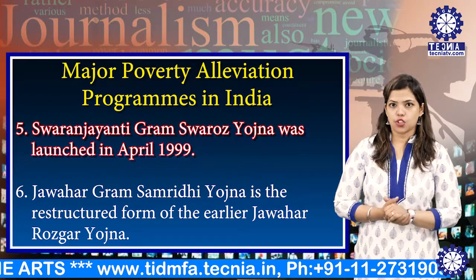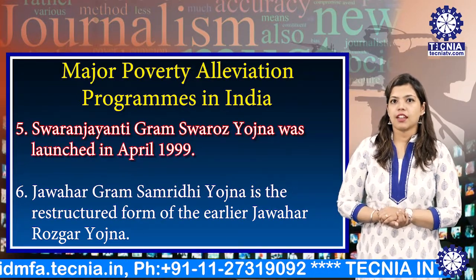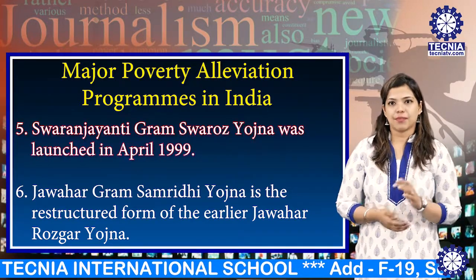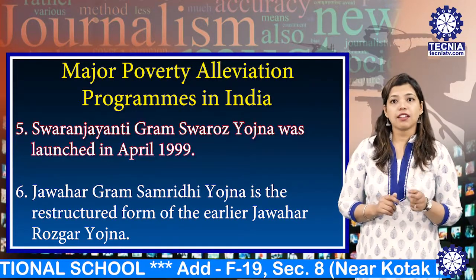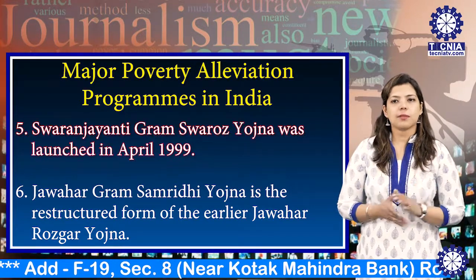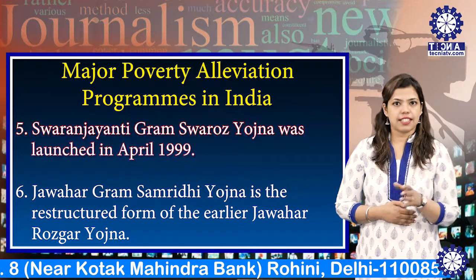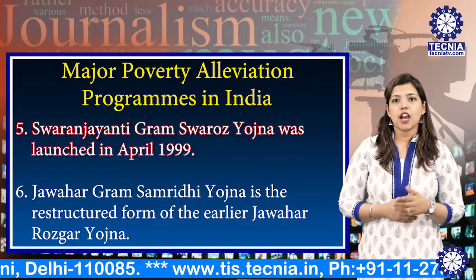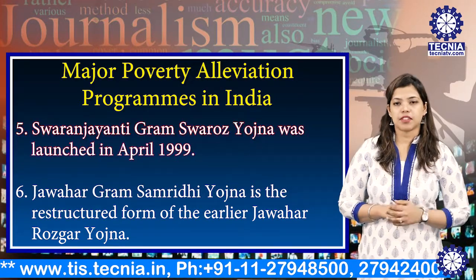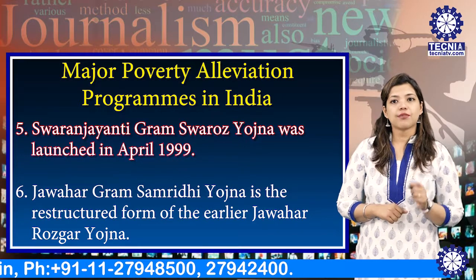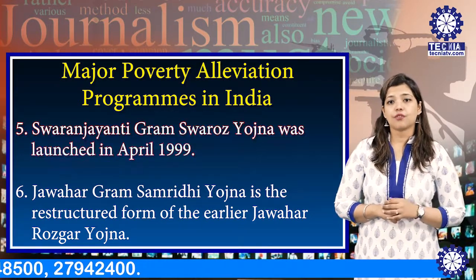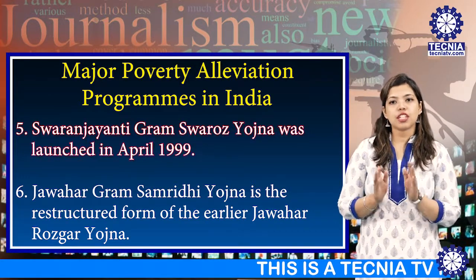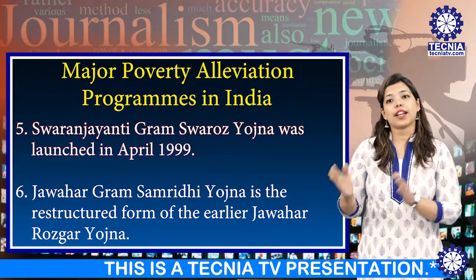The fifth program, Swarnajayanti Gram Swarozgar Yojana, was launched in April 1999. The Million Wells Scheme and the Development of Women and Children in Rural Areas programs have been merged into this scheme. The scheme attempts to combine bank loans and subsidy with a view to enabling beneficiaries to create income-generating assets. There is a monetary limit for subsidy in the case of irrigation projects. In other cases, the subsidy is limited to 30%, subject to a maximum of Rs. 7,500. A higher limit of Rs. 10,000 has been prescribed for SC/ST beneficiaries. The states contribute just 25% while the rest of the funds are provided by the central government.